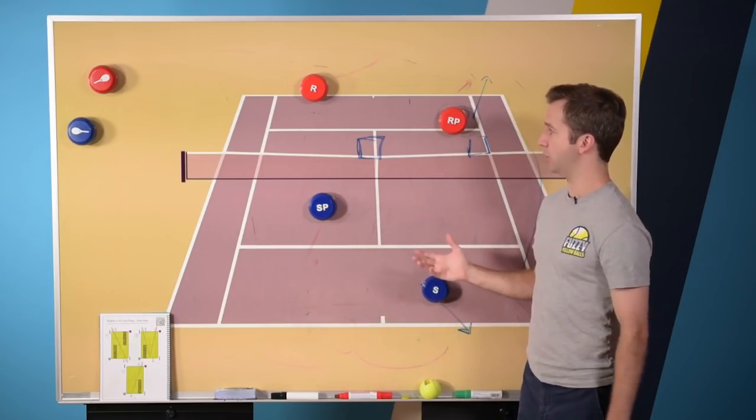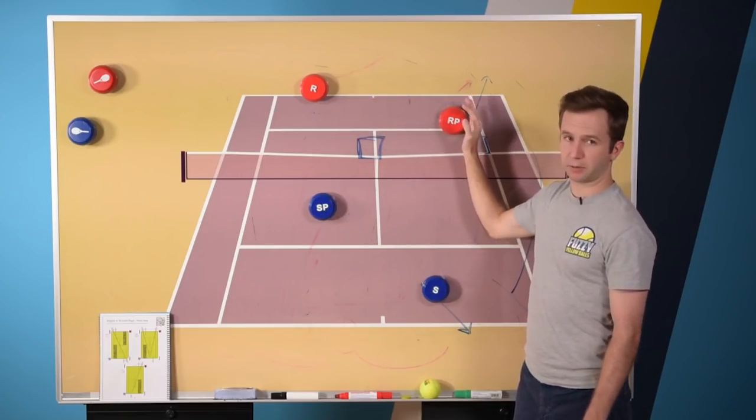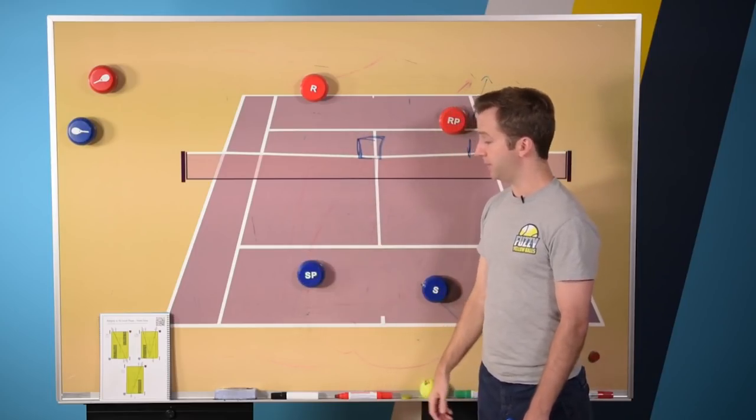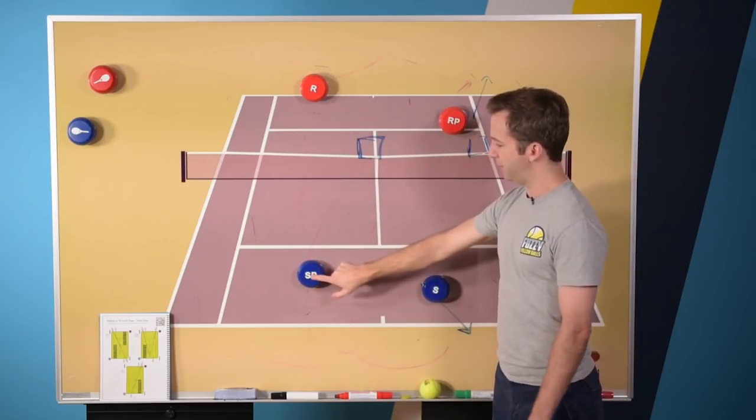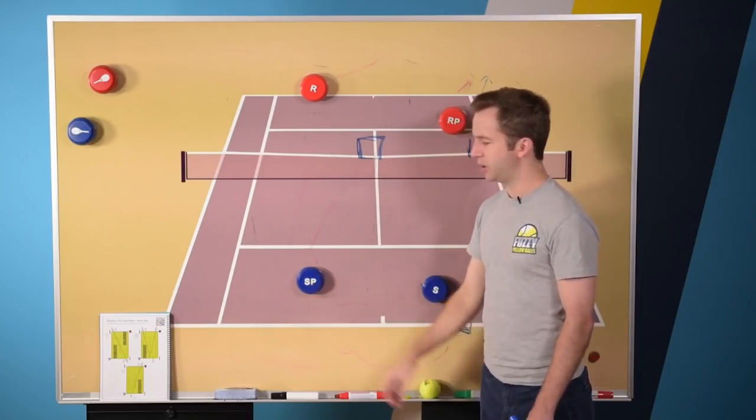And then if you're still getting killed, and the villain has a good serve, this person's got great volley, super aggressive, then I would tell, this is another Martina tip, have your partner not necessarily go all the way back to the baseline. That might be the last resort.